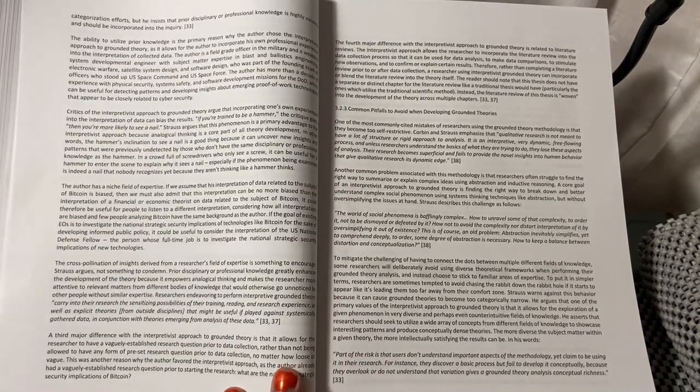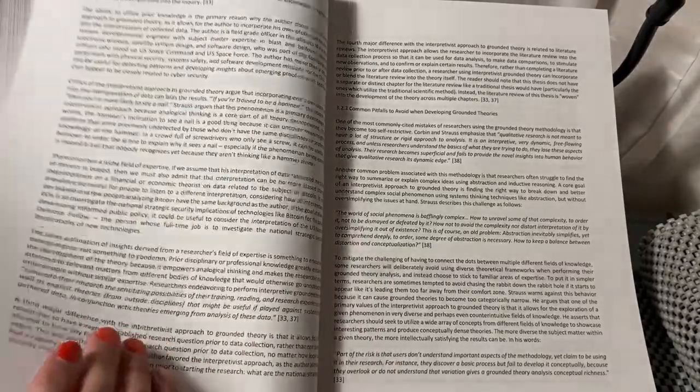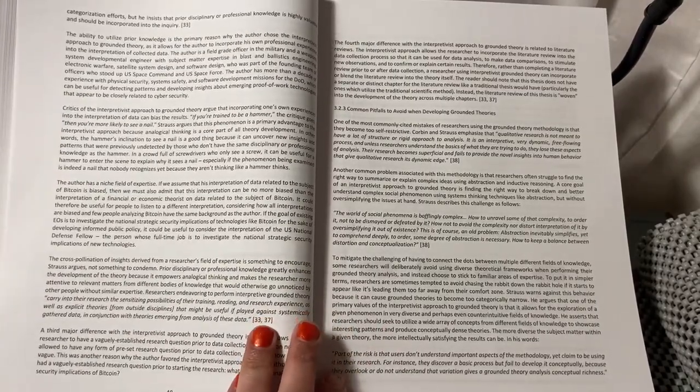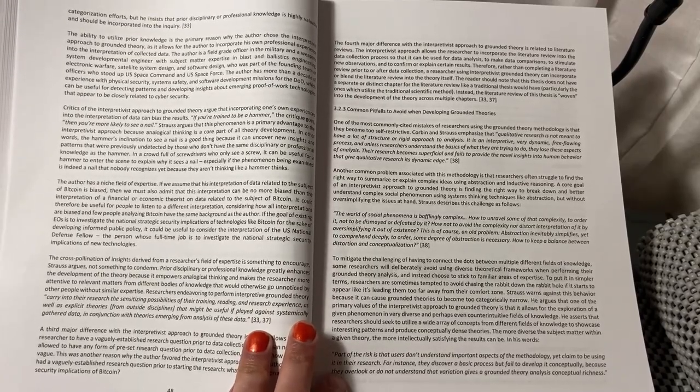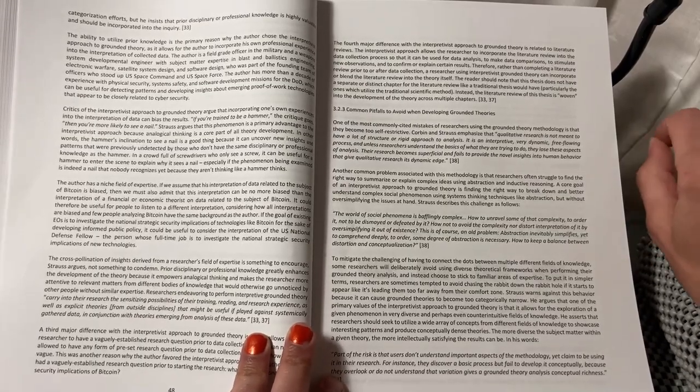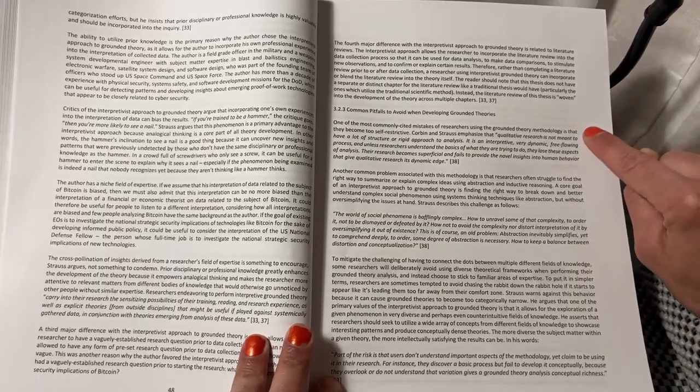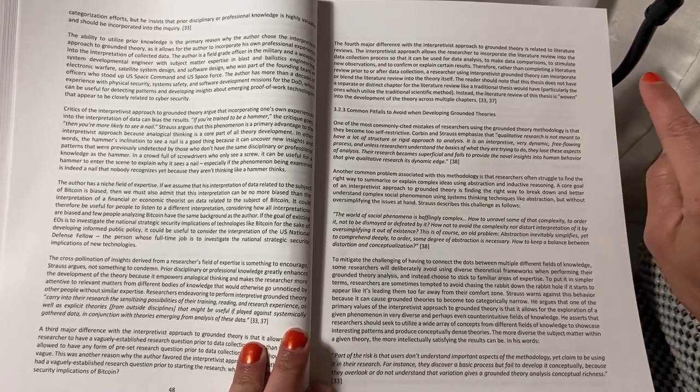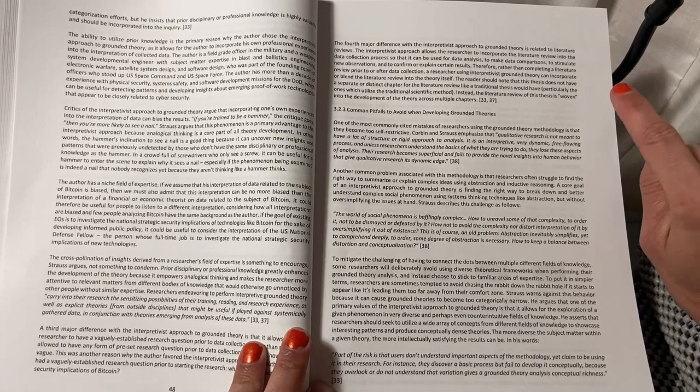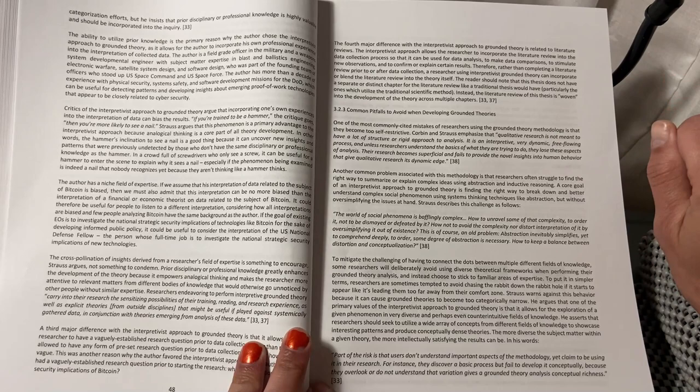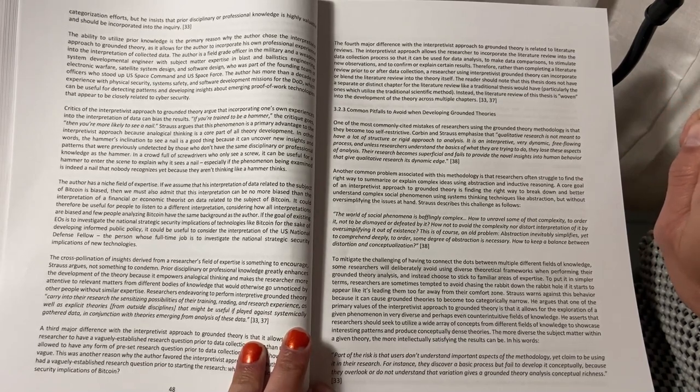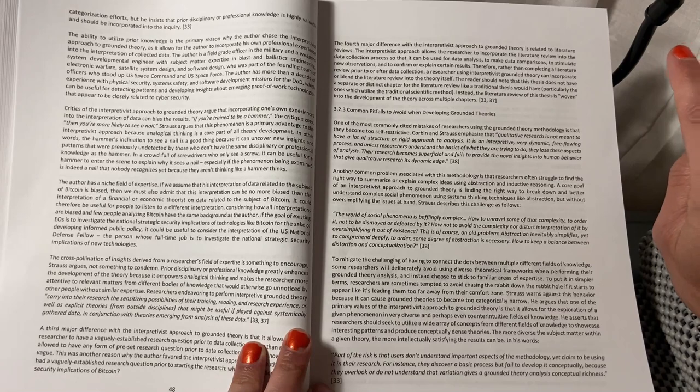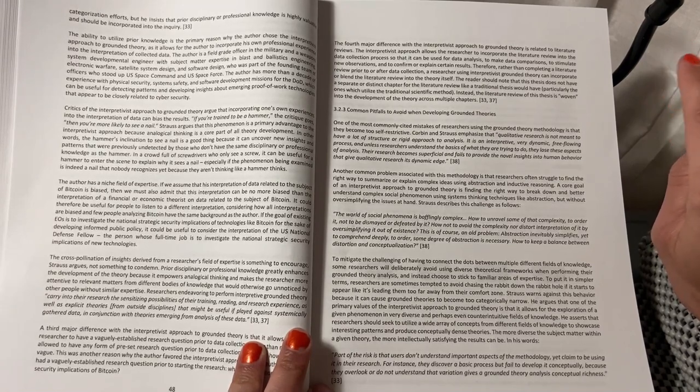Chapter 2.2.3 Common pitfalls to avoid when developing grounded theories. One of the most commonly cited mistakes of researchers using the grounded theory methodology is that they have become too self-restrictive. Corbin and Strauss emphasize that qualitative research is not meant to have a lot of structure or rigid approach to analysis. It is an interpretive, very dynamic, free-flowing process, and unless researchers understand the basics of what they are trying to do, they lose these aspects of analysis. Their research becomes superficial and fails to provide the novel insights to human behavior that give qualitative research its dynamic edge.